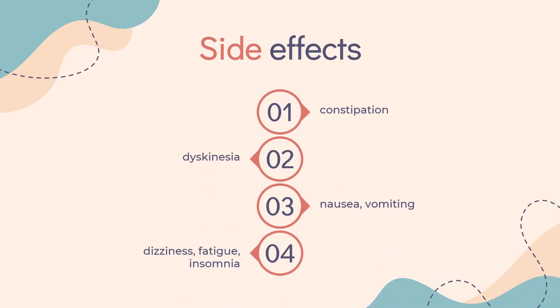General side effects of Rotigotine may include constipation, dyskinesia, nausea, vomiting, dizziness, fatigue, insomnia, somnolence, confusion, and hallucinations.